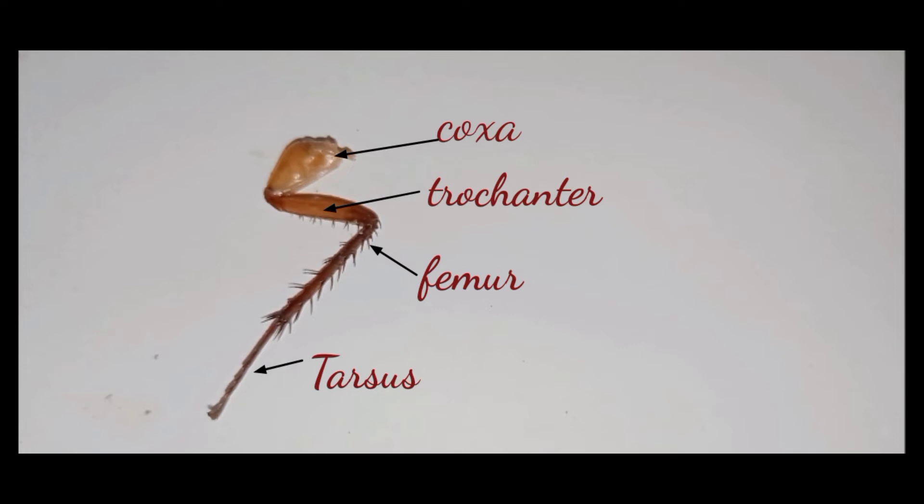And lastly, the tarsus. It acts like an ankle or foot that helps the cockroach to climb walls or walk upside down the ceiling.